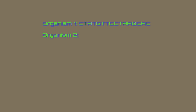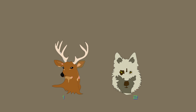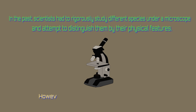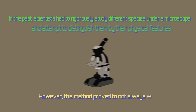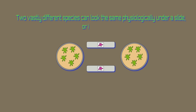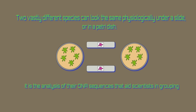In the NGS video, we talked about the importance and specificity of DNA sequences. You can identify an organism solely based on its DNA. In the past, scientists had to rigorously study different species under a microscope and attempt to distinguish them by their physical features. However, this method proved to not always work, because two vastly different species can look the same physiologically under a slide or in a petri dish. Yet it is the analysis of their DNA sequences that aids scientists in grouping different molecular biodiversity.